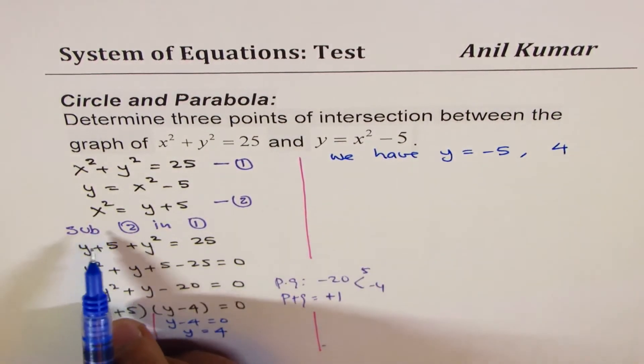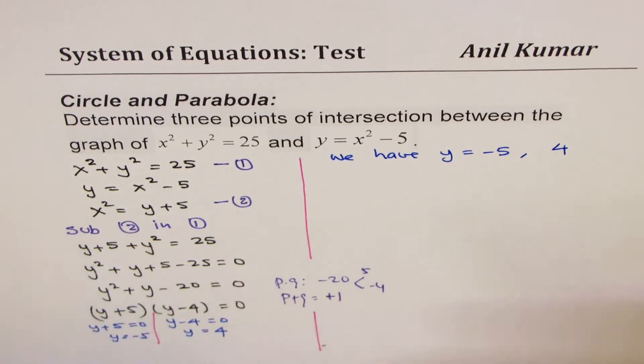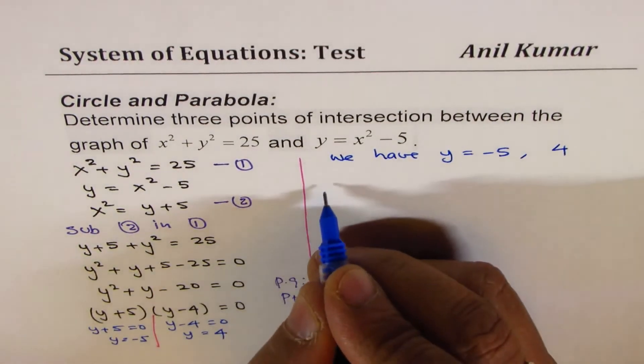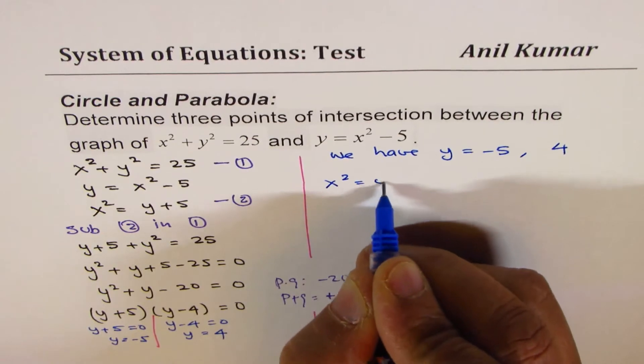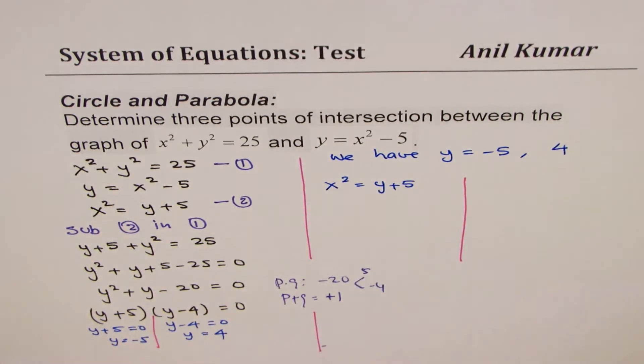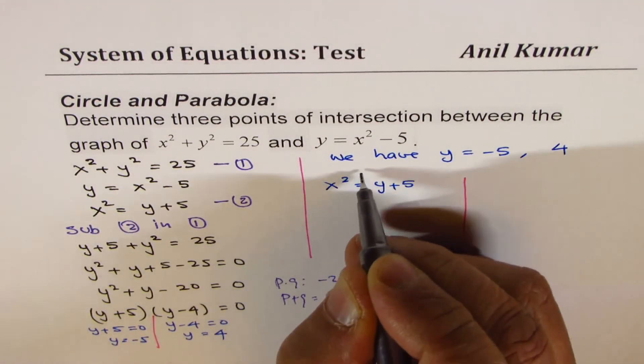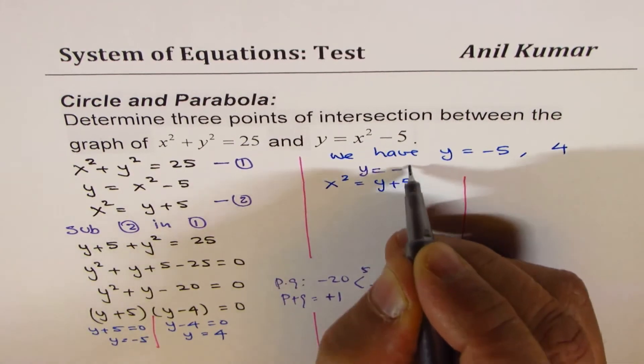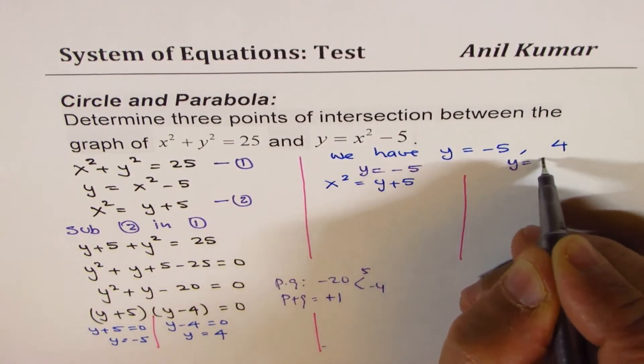For each value, we should find the value of x. So we have this equation: x squared equals y plus 5. We will actually find both the x values for y equals minus 5 and for y equals 4.